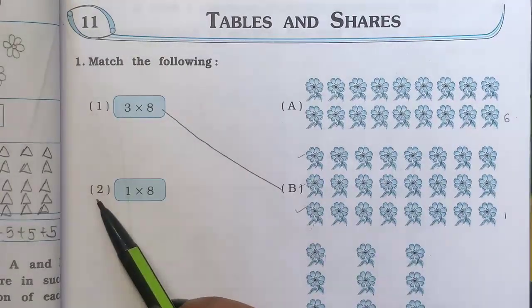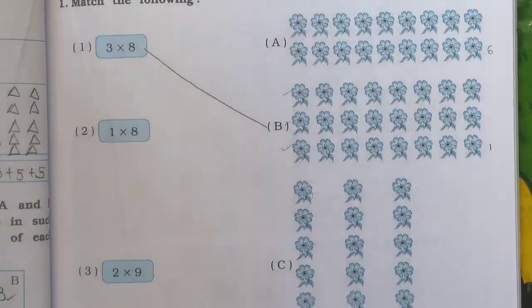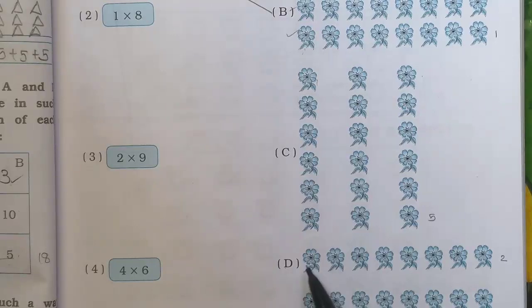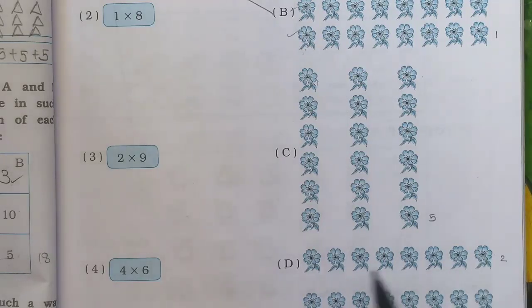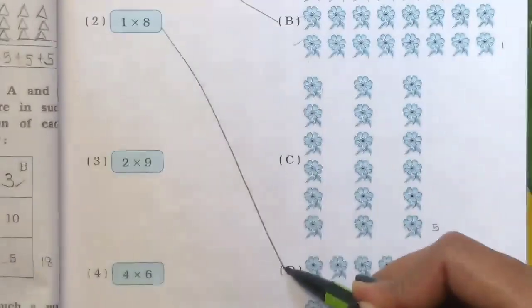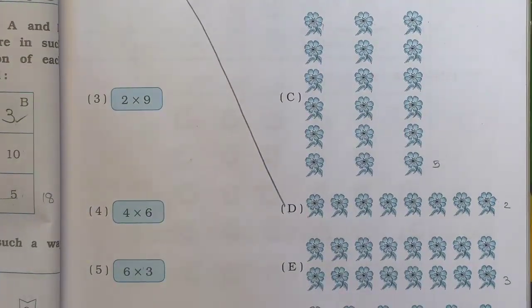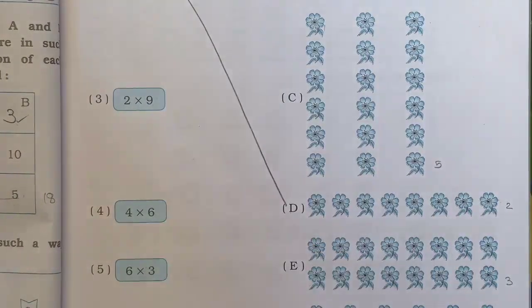Number 2 is 1 multiplied by 8, or 1 times 8. We have to find this picture. In D there is one group of 8 flowers: 1, 2, 3, 4, 5, 6, 7, 8. So this is 1 times 8. We match the second with D. Then number 3 is 2 times 9.